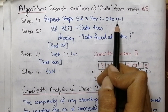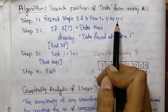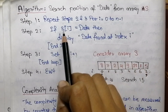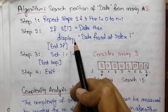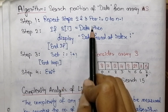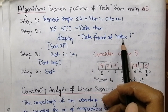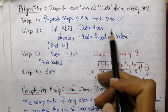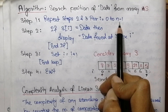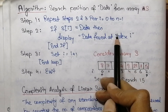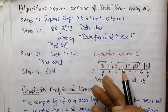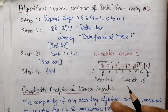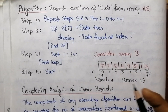Then step one is again performed — we check the condition where i is less than n minus one, and steps two and three are repeated until we find the desired element. If we reach the end of the array and still couldn't find the desired element, then an error message is printed indicating that the data is not present in the array, and we exit from the algorithm.